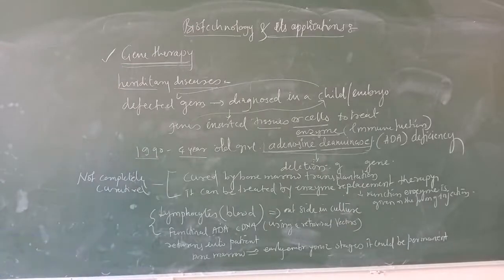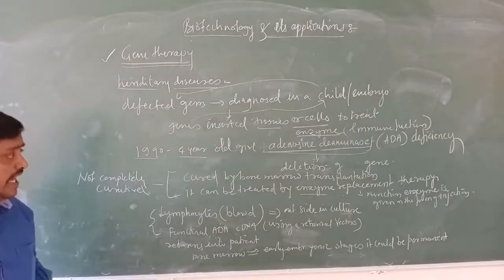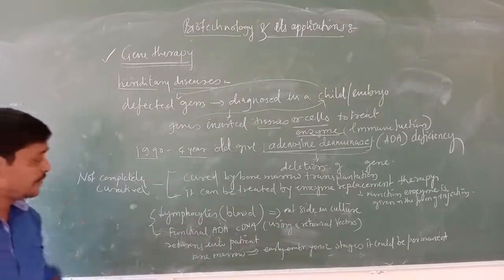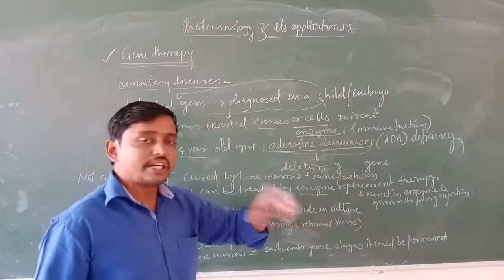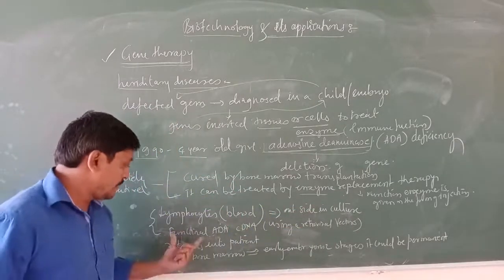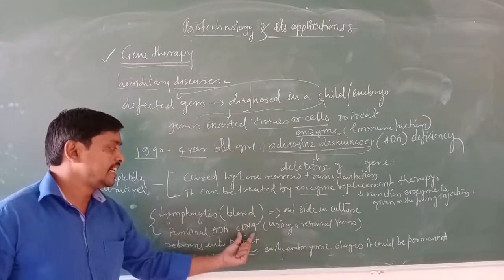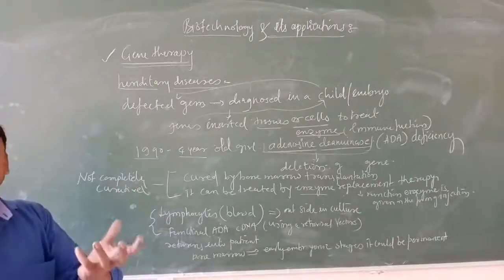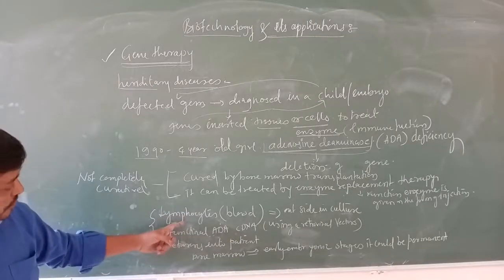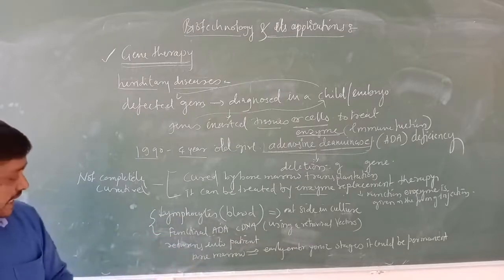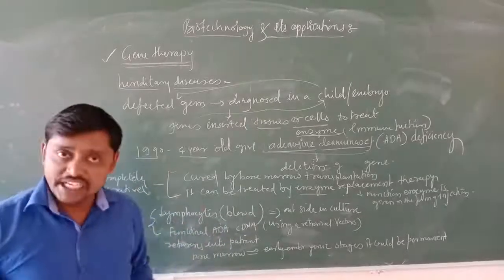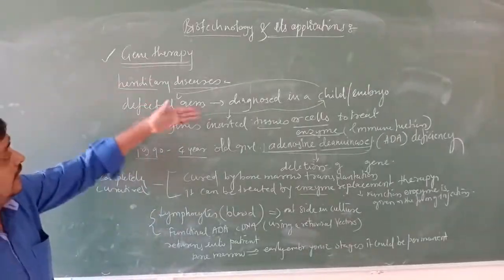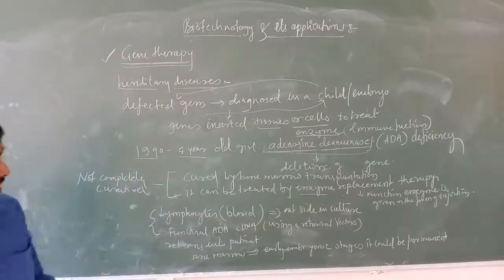However, these two methods — bone marrow transplantation and enzyme replacement therapy — are not completely curable. So we go for gene therapy. In gene therapy, the patient's lymphocytes are removed from the blood, cultured in a culture medium, and functional ADA complementary DNA is added using a retroviral vector. Both are then incubated and returned into the patient.